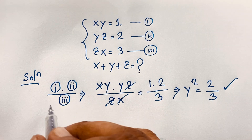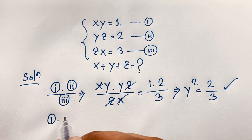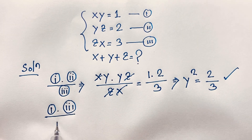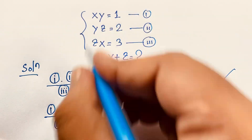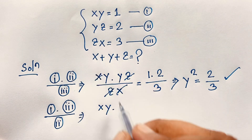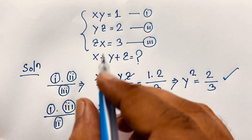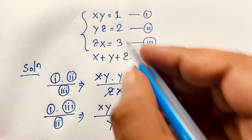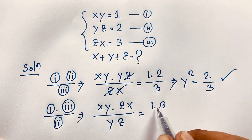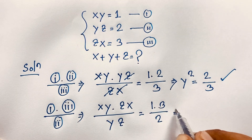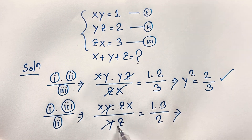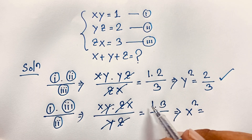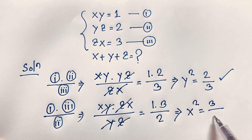Now I multiply the first equation and third equation, and divide by the second equation. That gives xy times zx over yz, equal to 1 times 3 over 2. The y's cancel out, the z's cancel out, leaving x squared equals 3 over 2.